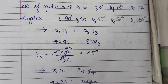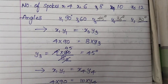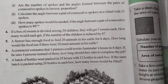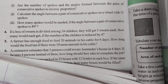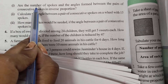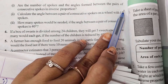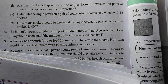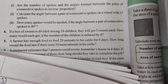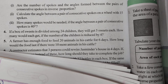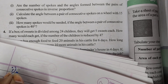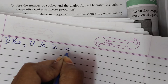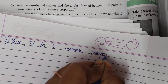अब question number 3 के sub-questions देखिए। Sub-question 1: Are the number of spokes and the angles formed between pairs of consecutive spokes in inverse proportion? Yes — क्योंकि number of spokes increase होते हैं तो angles decrease होती हैं — so yes, it is in inverse proportion।